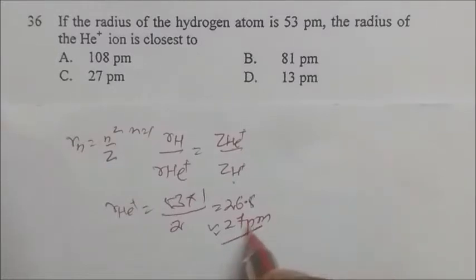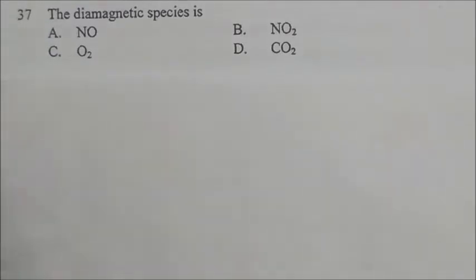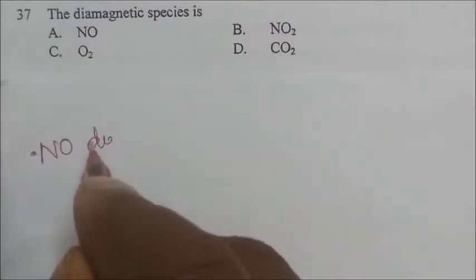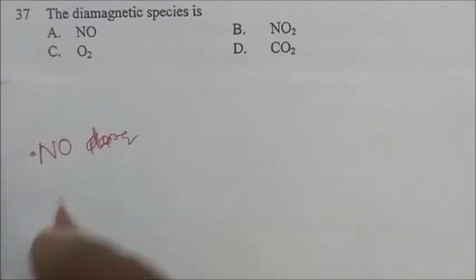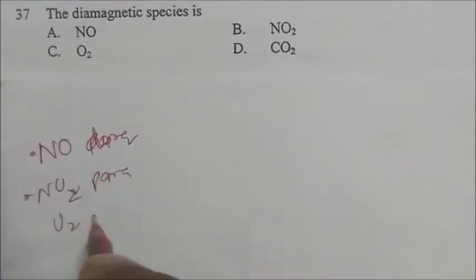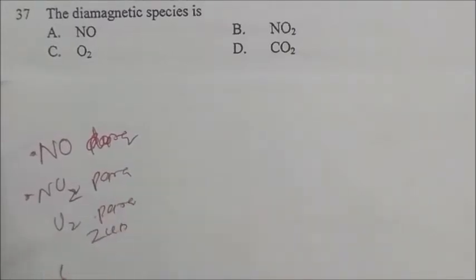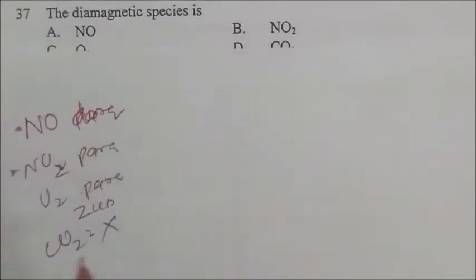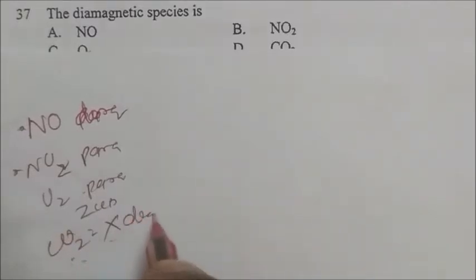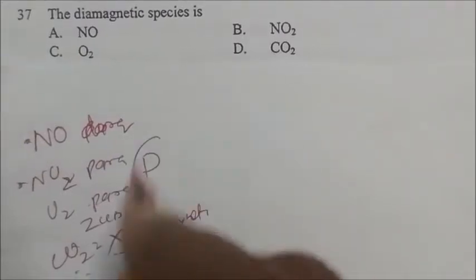The next question asks for the diamagnetic species. Nitrogen has one unpaired electron — paramagnetic. NO2 also has one unpaired electron — paramagnetic. O2 has two unpaired electrons — also paramagnetic. Carbon dioxide (CO2) has no unpaired electrons, so it is diamagnetic. The answer is D.